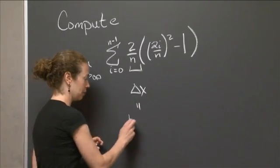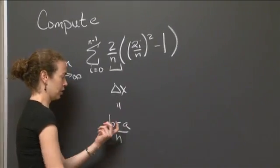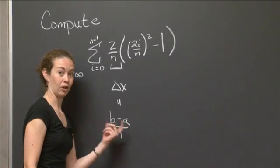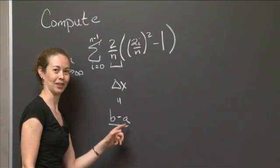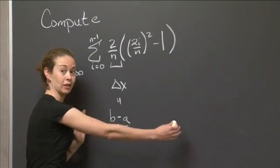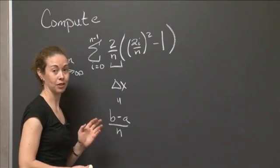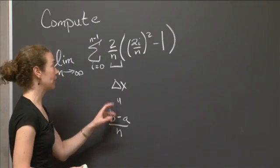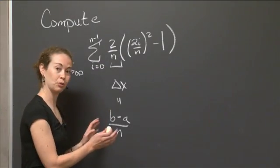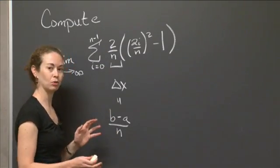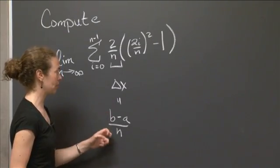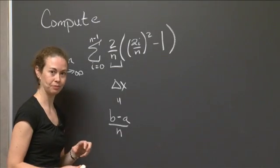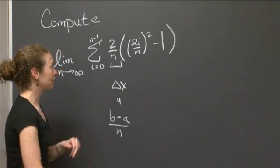So delta x being equal to 2 over n, we know delta x equals b minus a over n, where b and a are our right endpoint and our left endpoint. We integrate from a to b. So b minus a is the length of the interval. So this is really dividing up whatever interval we're integrating over into n equal subintervals. So that's my first thought, is that b minus a over n is equal to 2 over n.